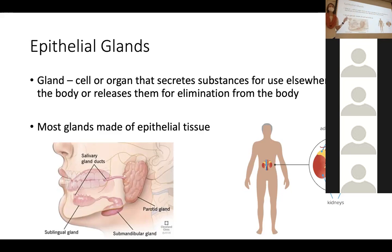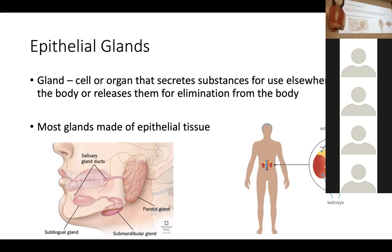Glands are releasing or secreting something that's either used elsewhere in the body — like the adrenal glands secreting hormones — or just excreted and not necessarily used in the body. Saliva is kind of used elsewhere since we swallow it, but also just excreted. So glands can function for elimination or for use elsewhere in the body.